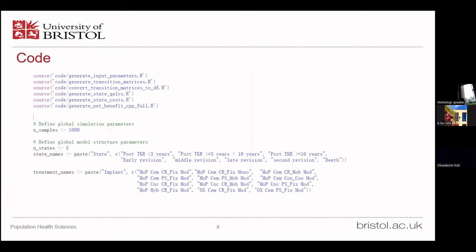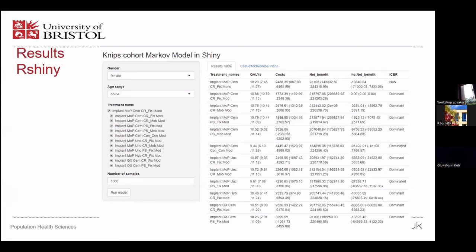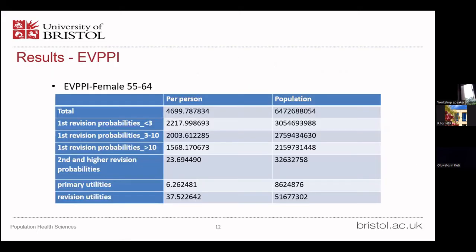Here is the main code of this project, and this is how to use lapply instead of loops to optimize the function with C++. The result table includes quality, cost, net benefit, incremental net benefit with mean and 95% credible interval, and ICERs. From the EVPPI result tables, it is very clear that the first revision probabilities parameter has a very large value, especially for the less-than-three-year time period. That indicates this parameter is very important in this project.